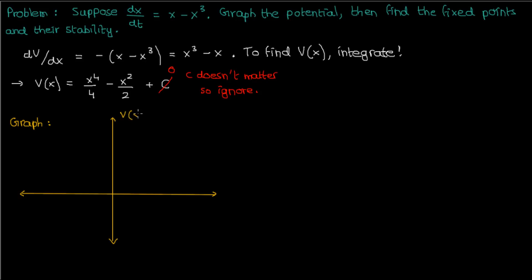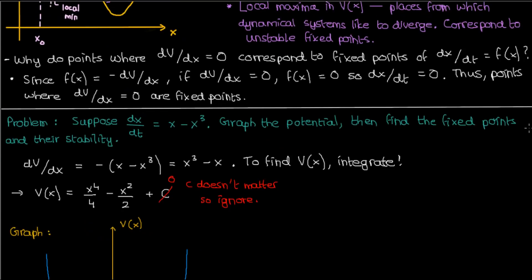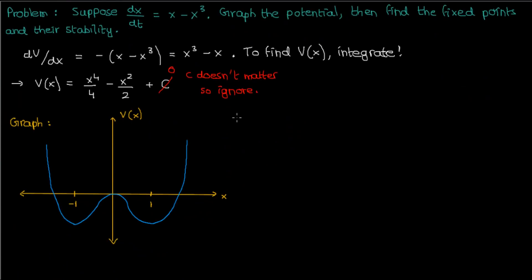So let's solve the first part of the problem, which is to graph the potential V(x). And when we do that, we'll get something that looks like this. Now that we've plotted the potential, we can go ahead and solve the rest of the problem. From our discussion before, we know that the fixed points of the dynamical system correspond to stationary points on the potential V(x), so places like local minima and local maxima. As a result, the fixed points of our dynamical system are negative 1, 0, and 1.